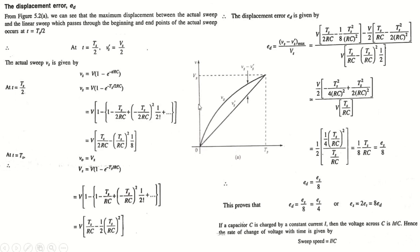At t = TS/2, the ideal value VS' = VS/2. The actual sweep signal is exponential: VS = V × (1 − e^(−t/RC)). At t = TS/2, this becomes V × (1 − e^(−TS/2RC)). Expanding in an infinite series and ignoring terms higher than third order, we get V × (TS/(2RC) − (TS/RC)²/8).